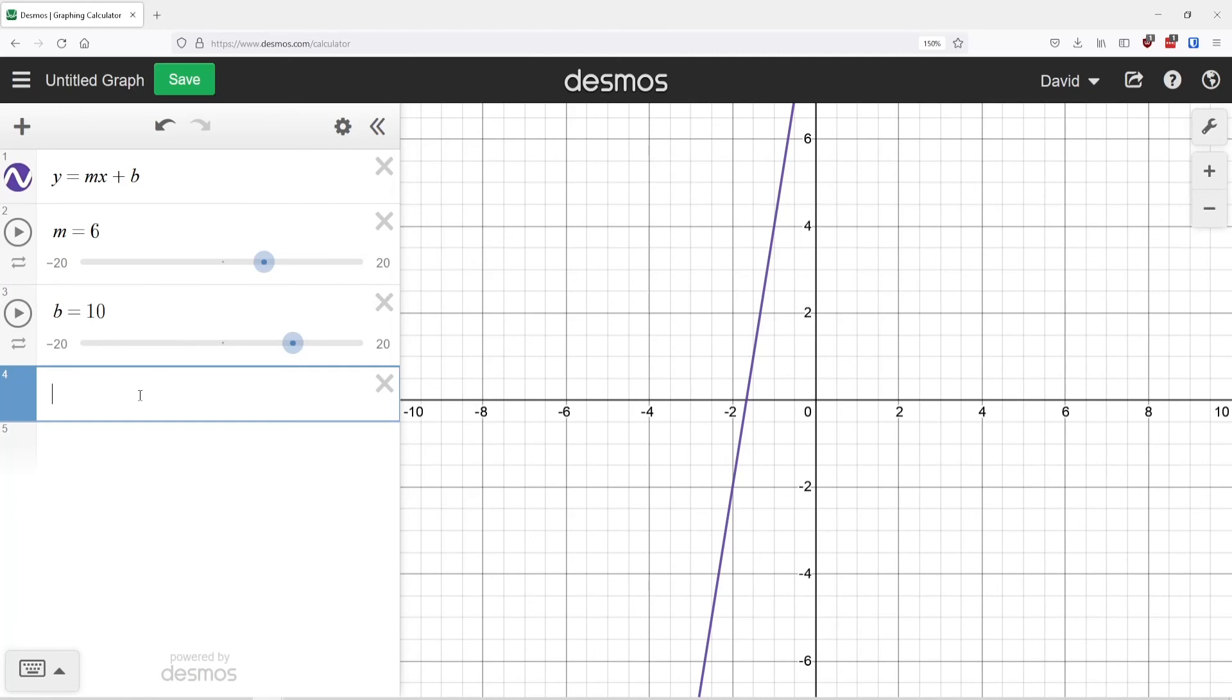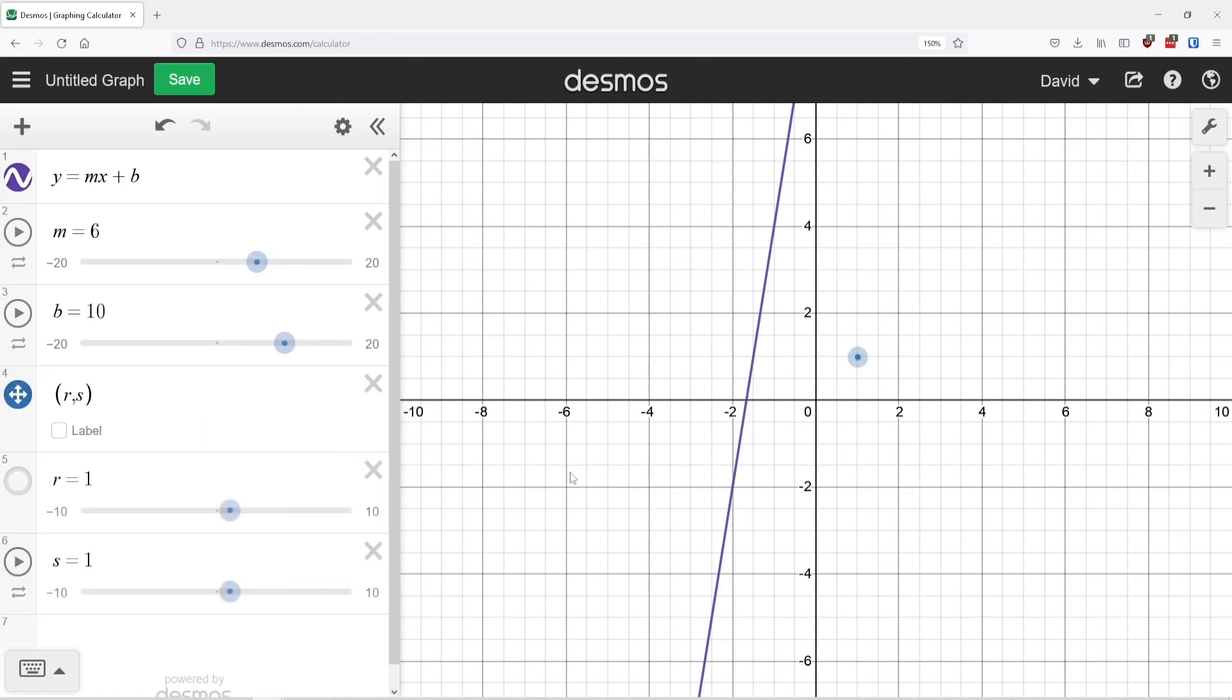We can also do the same thing with points. So if I did something like r, s, as a point, it's again saying I don't know what r and s are, so I'm going to add a slider for those. And it created a slider at 1, 1, and then I have the ability to slide this around and do something like this. And again, you can hit play and manipulate this as much as you want and change that and see the interactivity.